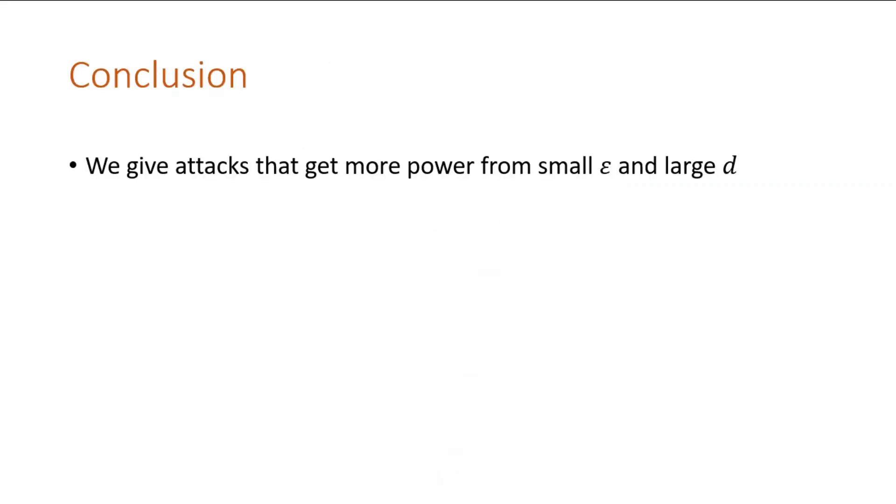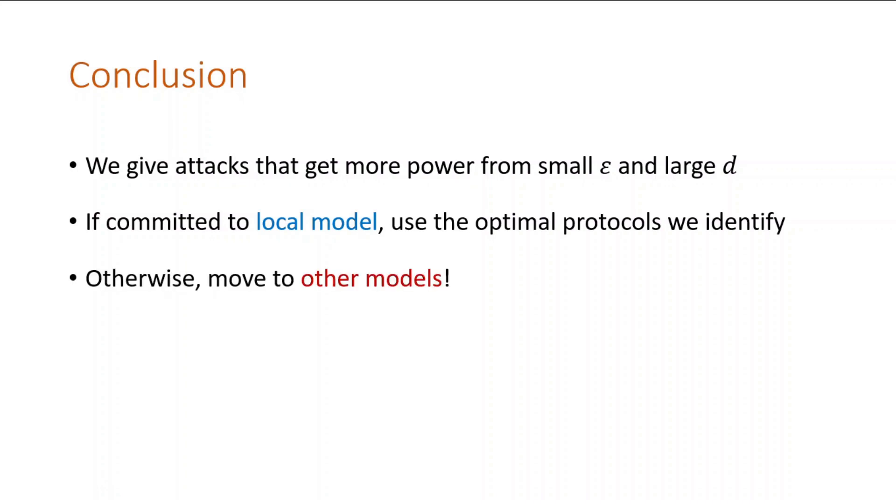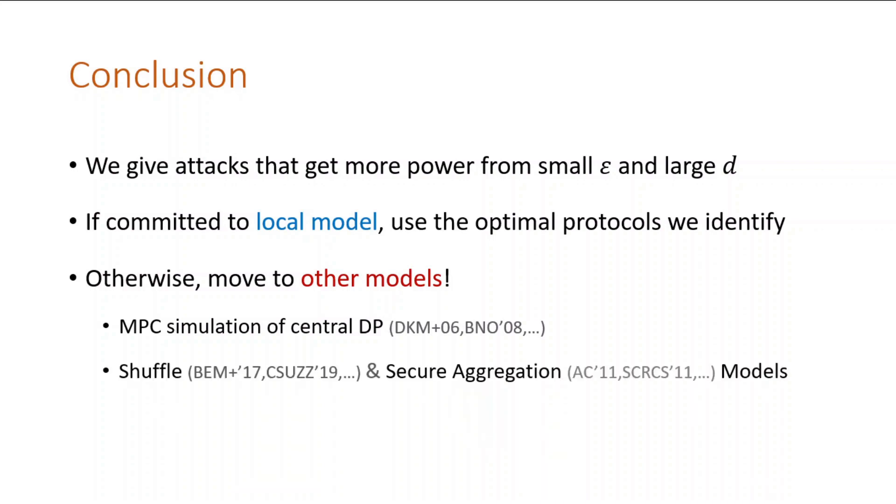To sum up, we've shown that attacks are more powerful with stronger privacy and bigger dimension. If implementations require local DP, attention should be paid to the optimal protocols we identify in our paper. Otherwise, other models hold promise. We could simulate centrally private algorithms with secure multiparty computation. As a special case of that, we can consider the recent shuffle and secure aggregation models. There has not been as much research into manipulation attacks in these two models, at least as much as in the local model, so it is ripe for investigation. This concludes the talk. Thank you for watching.